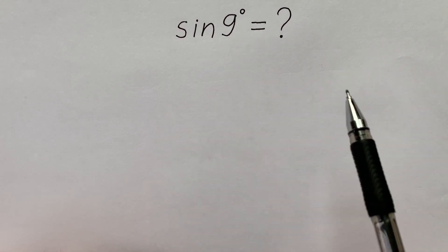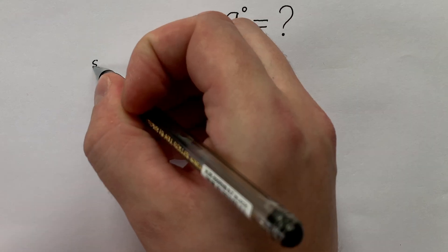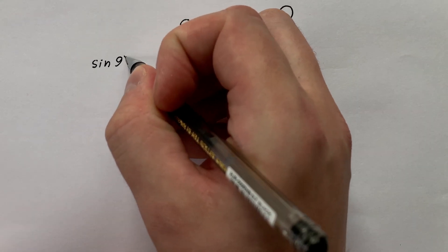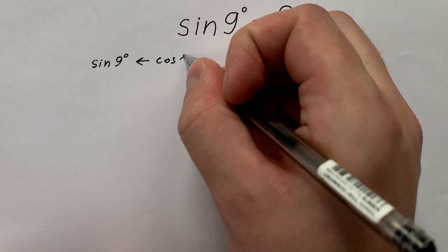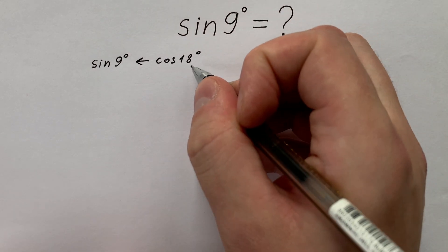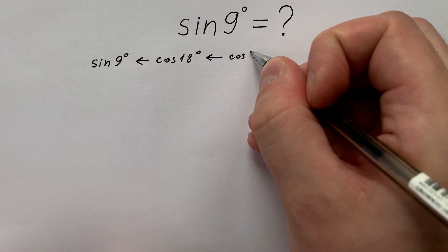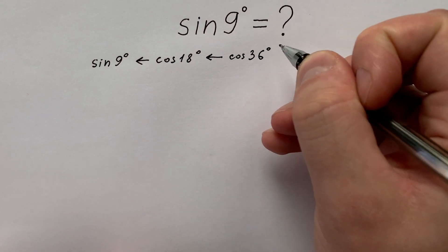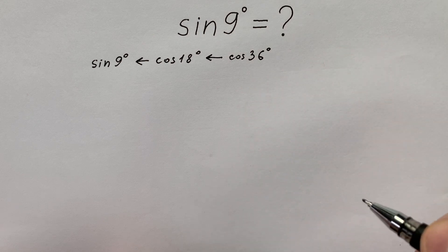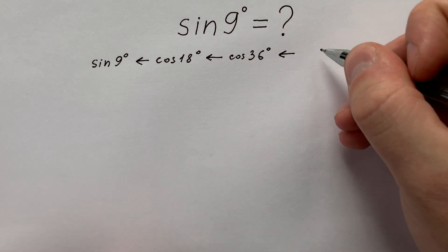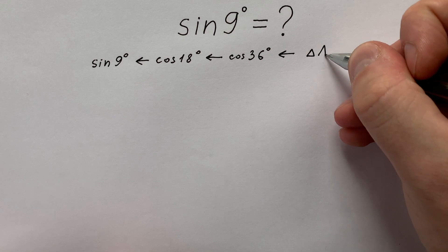Look how I started. My logic was next. Sine 9 degrees we can find from cosine 18 degrees. Cosine 18 degrees we can find from cosine 36 degrees. And cosine 36 degrees we can find from an isosceles triangle ABC.